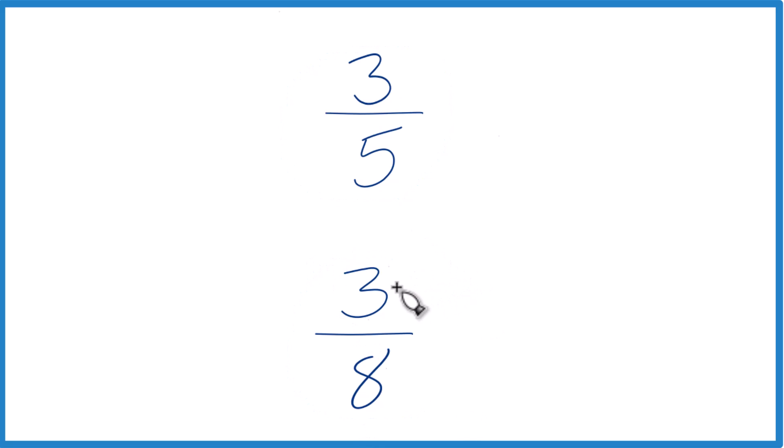Well, you could maybe reason it out, or on a calculator you could divide three by five, get a decimal, divide three by eight, get a decimal, and compare them. See if three-fifths is larger or smaller than three-eighths.